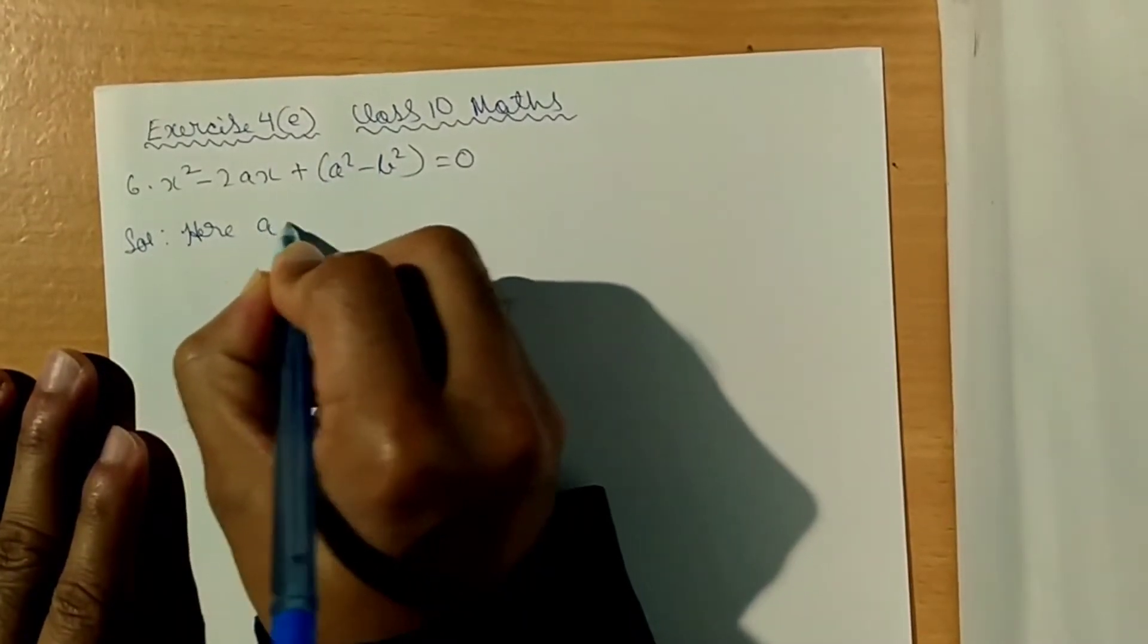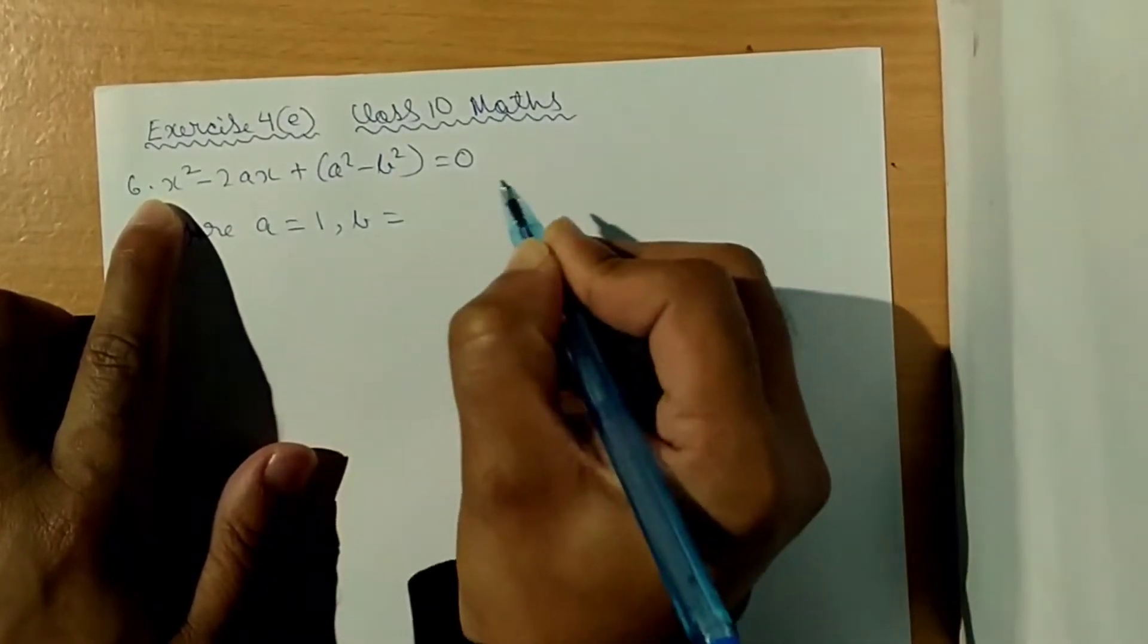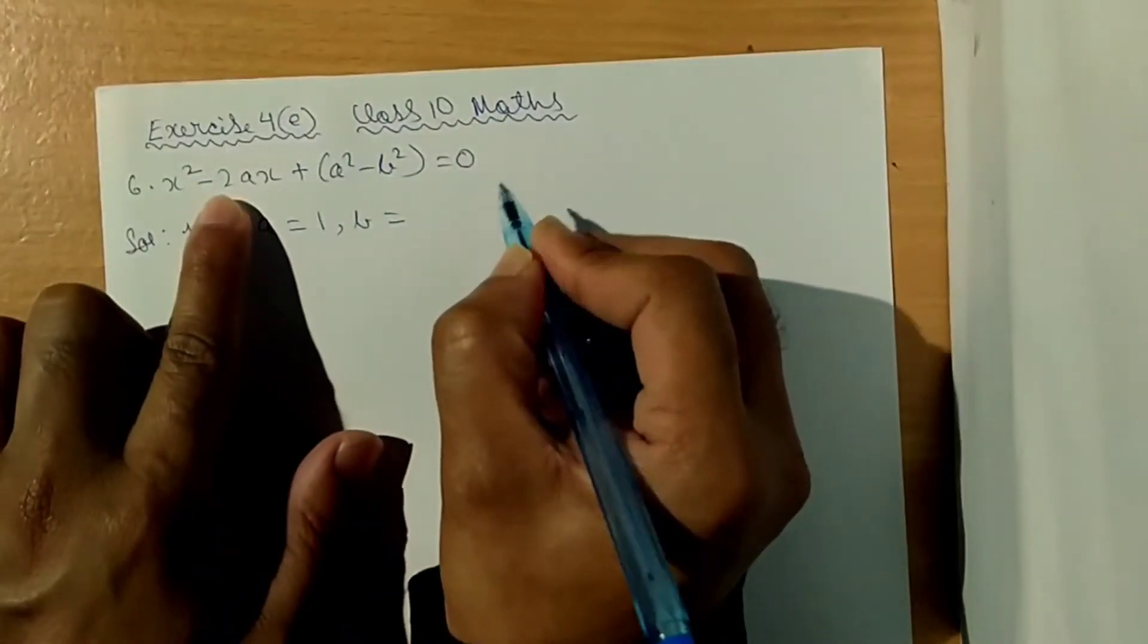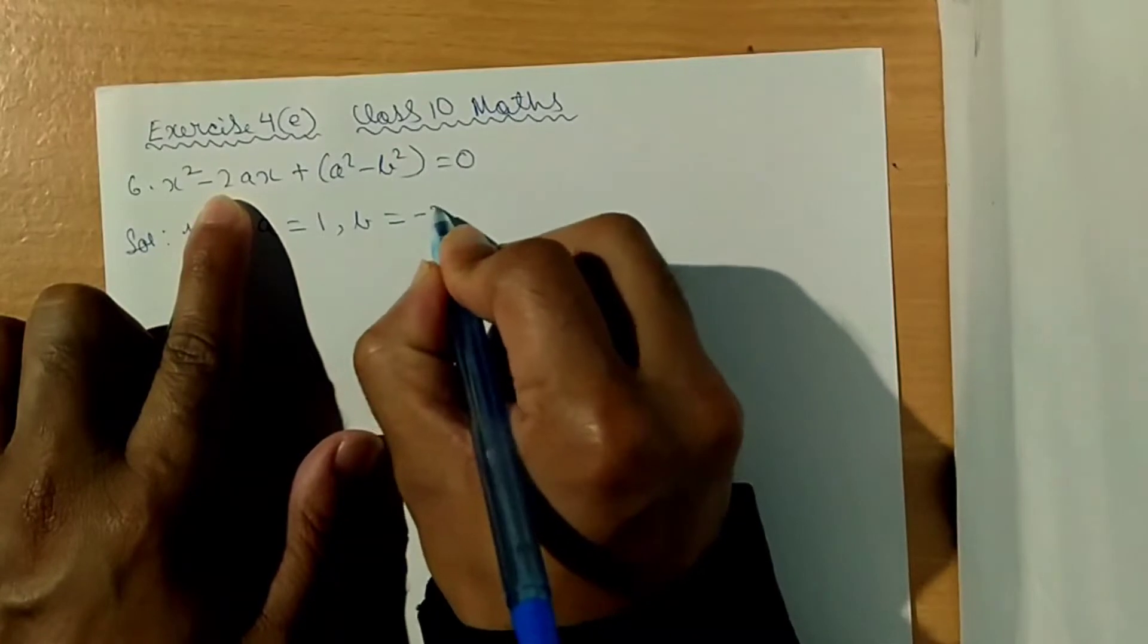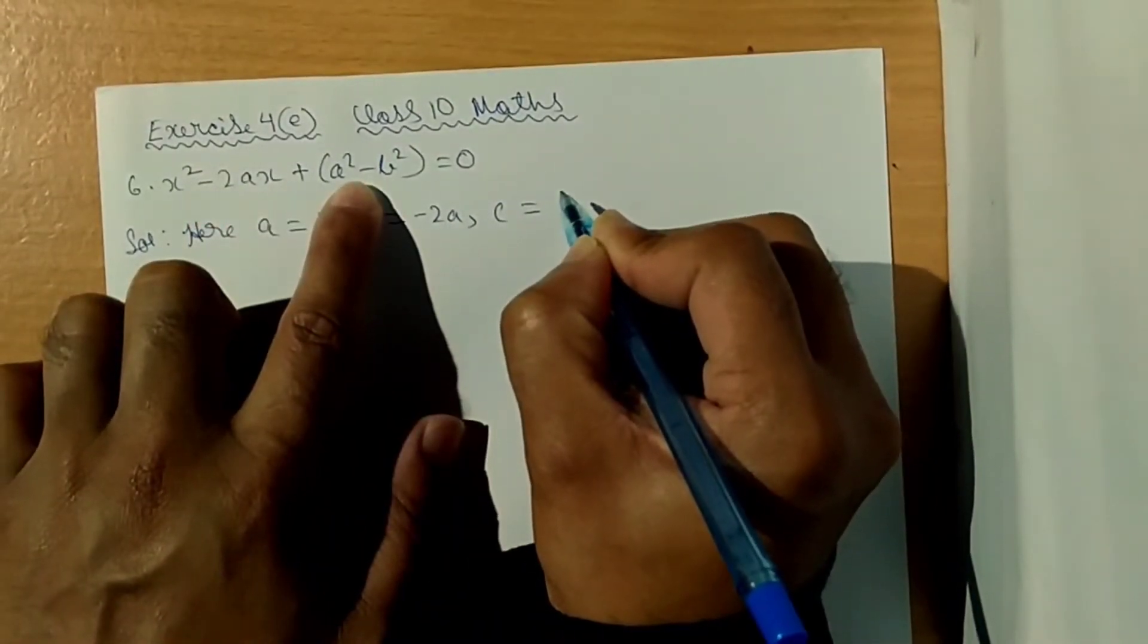Now here, A is equal to 1, and B is equal to the X coefficient minus 2A. And C is equal to the constant A squared minus B squared.